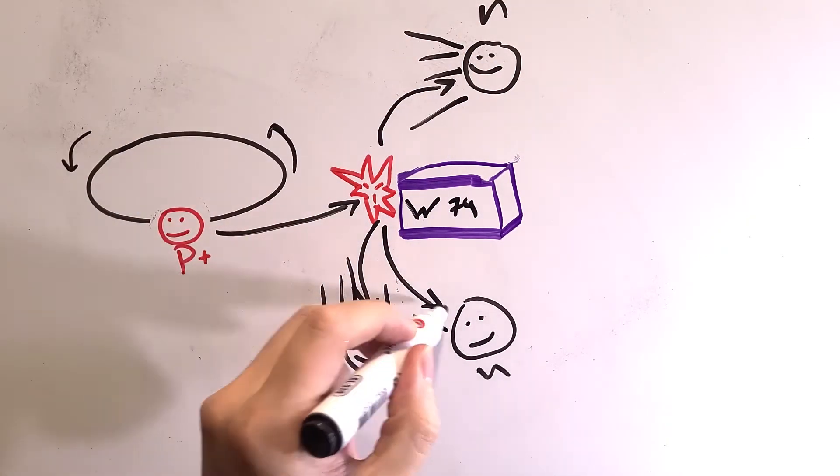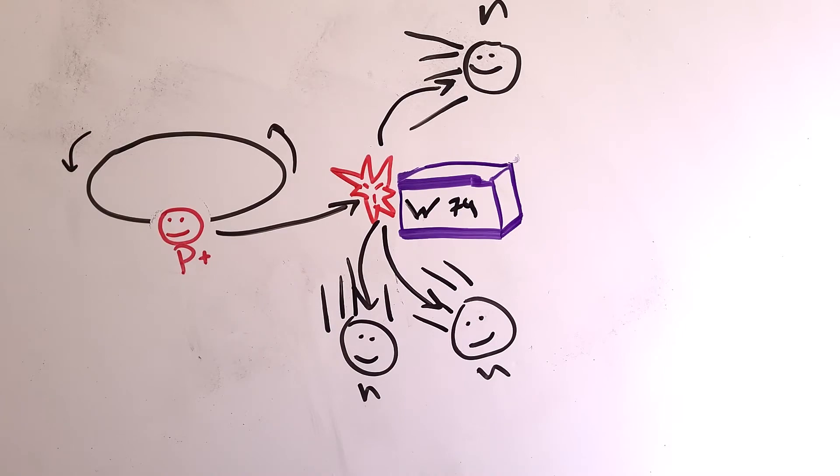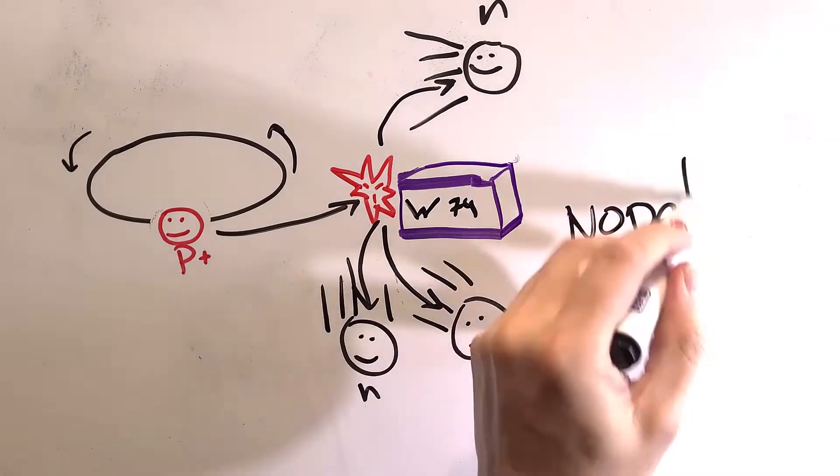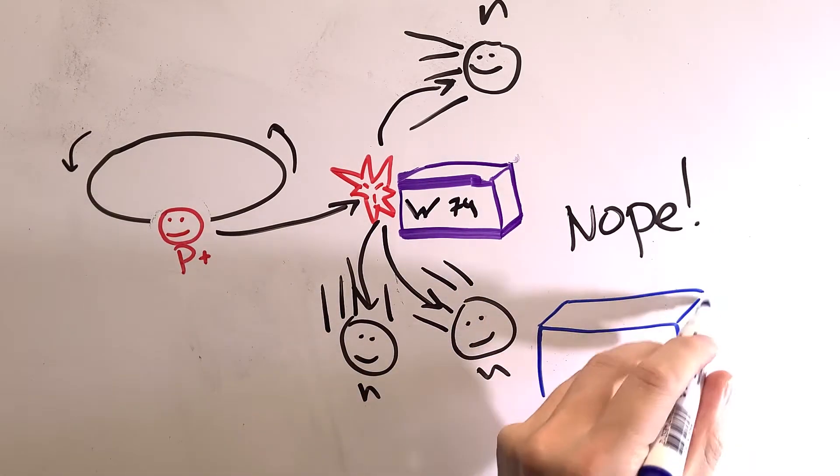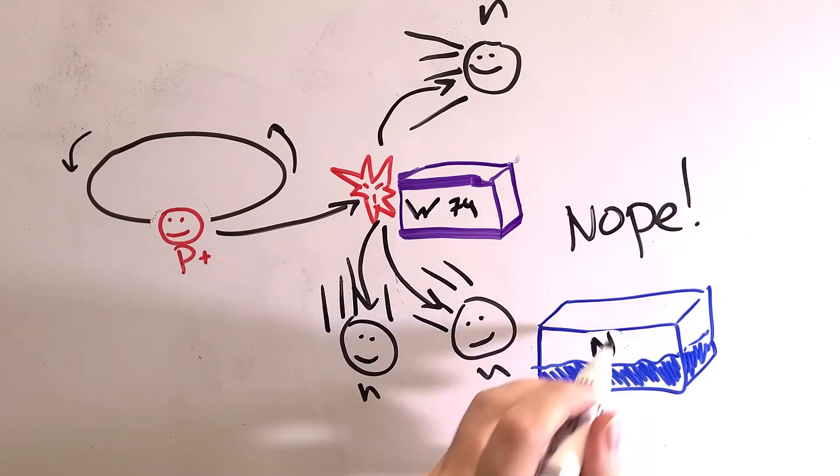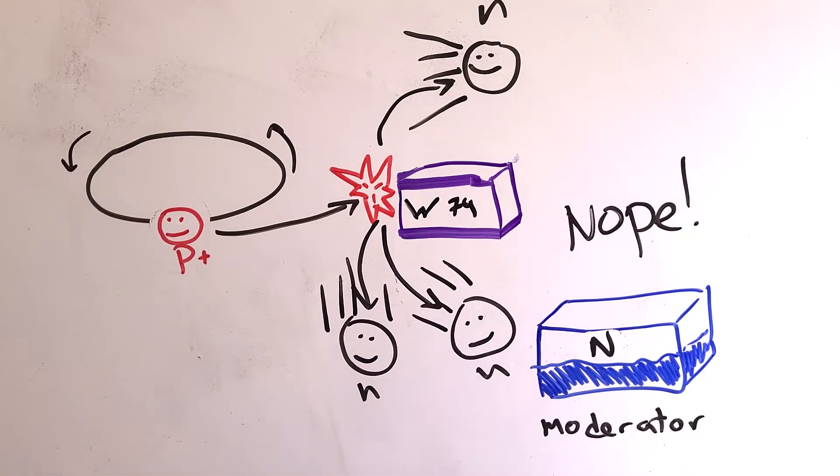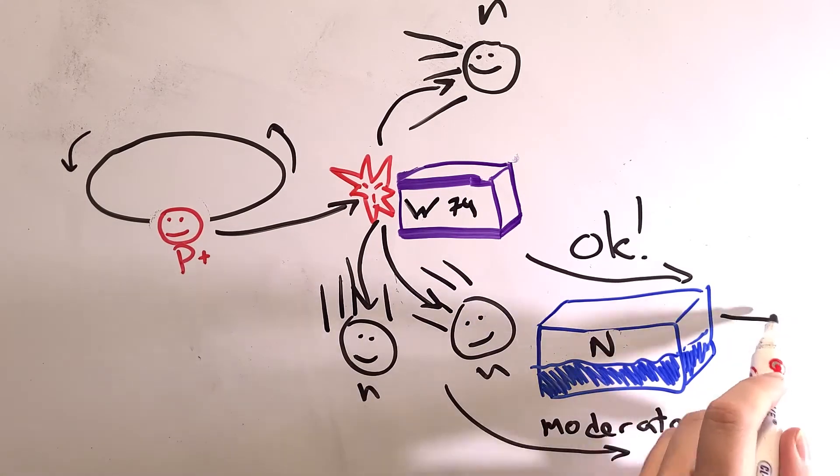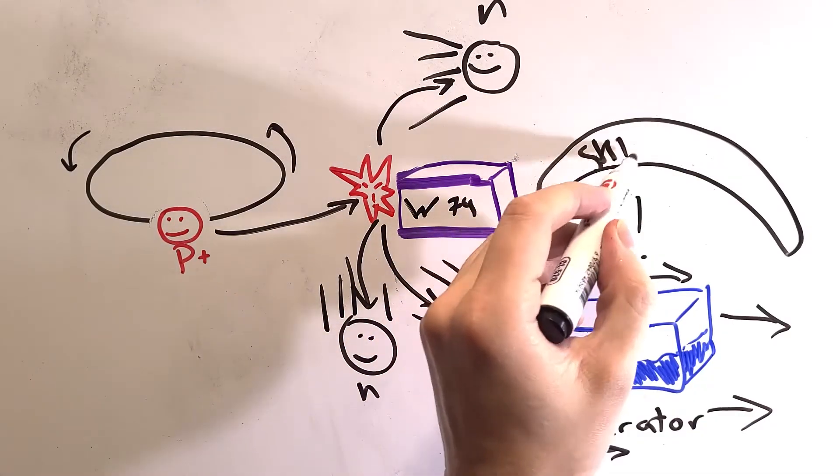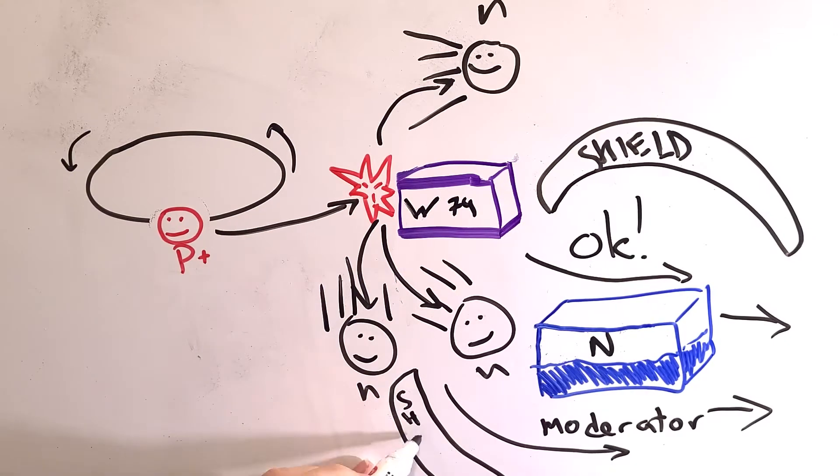It turns out these neutrons are too fast to be used for anything. Plus, they are flying in every direction, so no good. Let's put a tank of liquid nitrogen in their way to slow them down to something decent. This thing is called a moderator, by the way. Now we have preferred direction. We can put our instruments around the moderators and shield everything else.